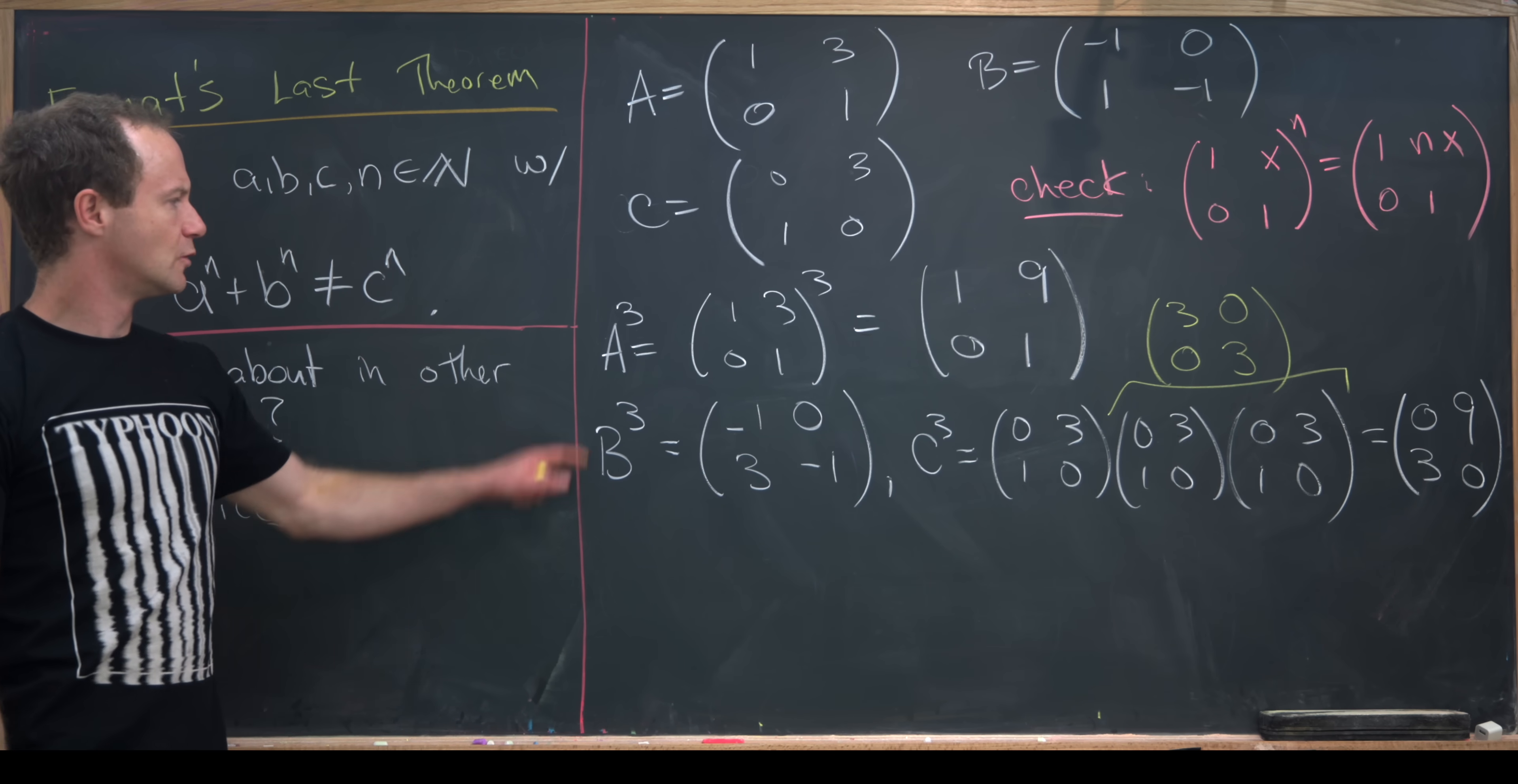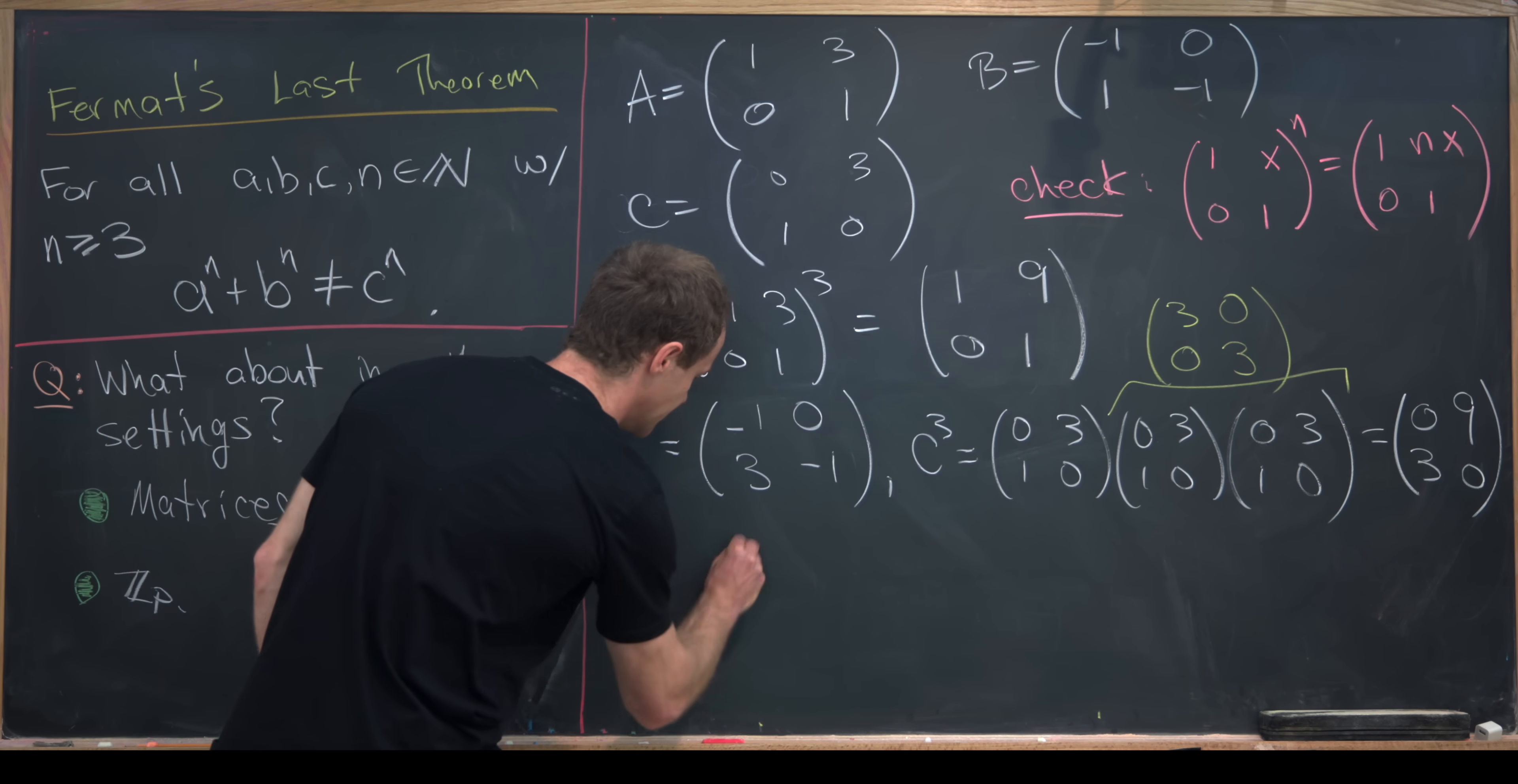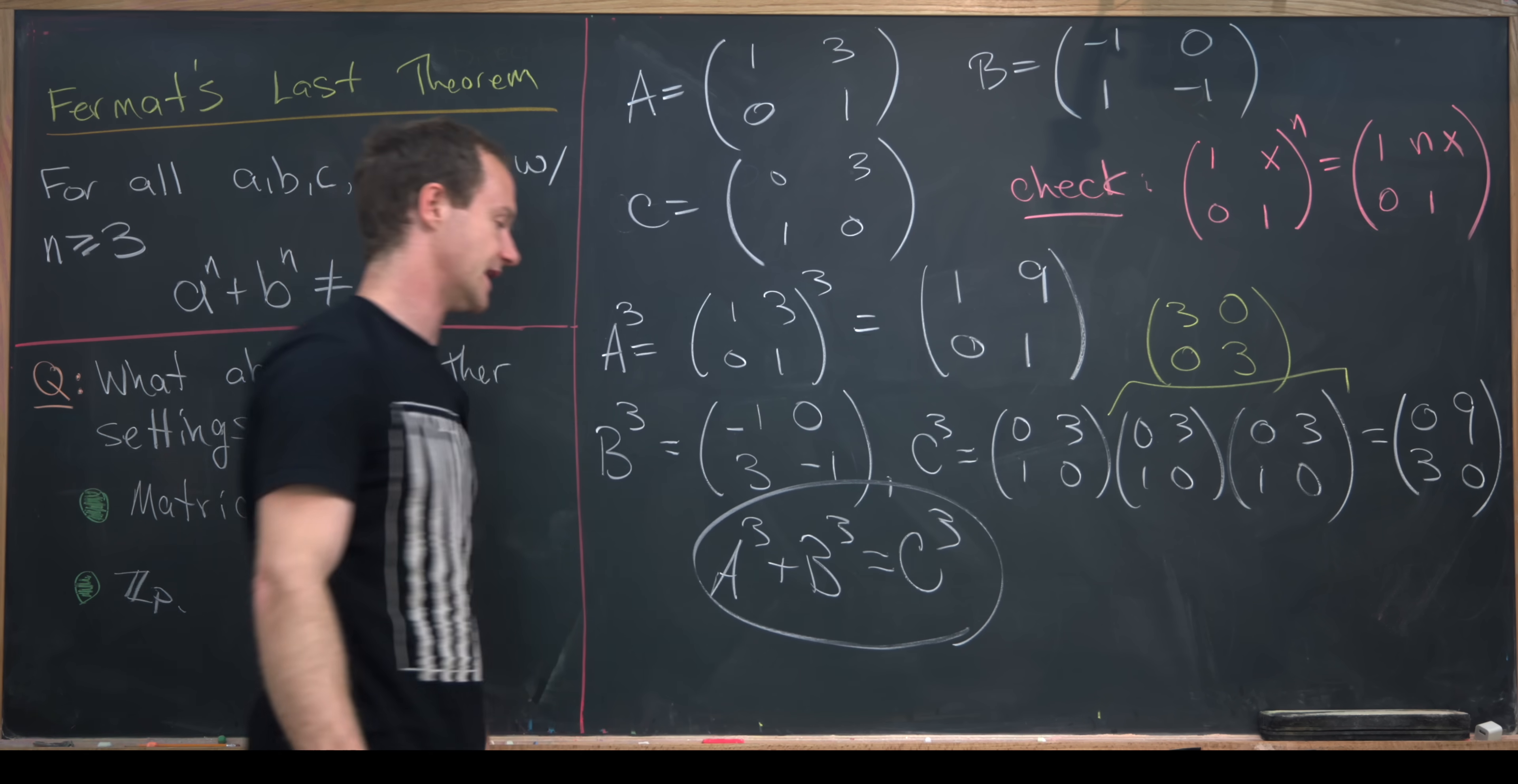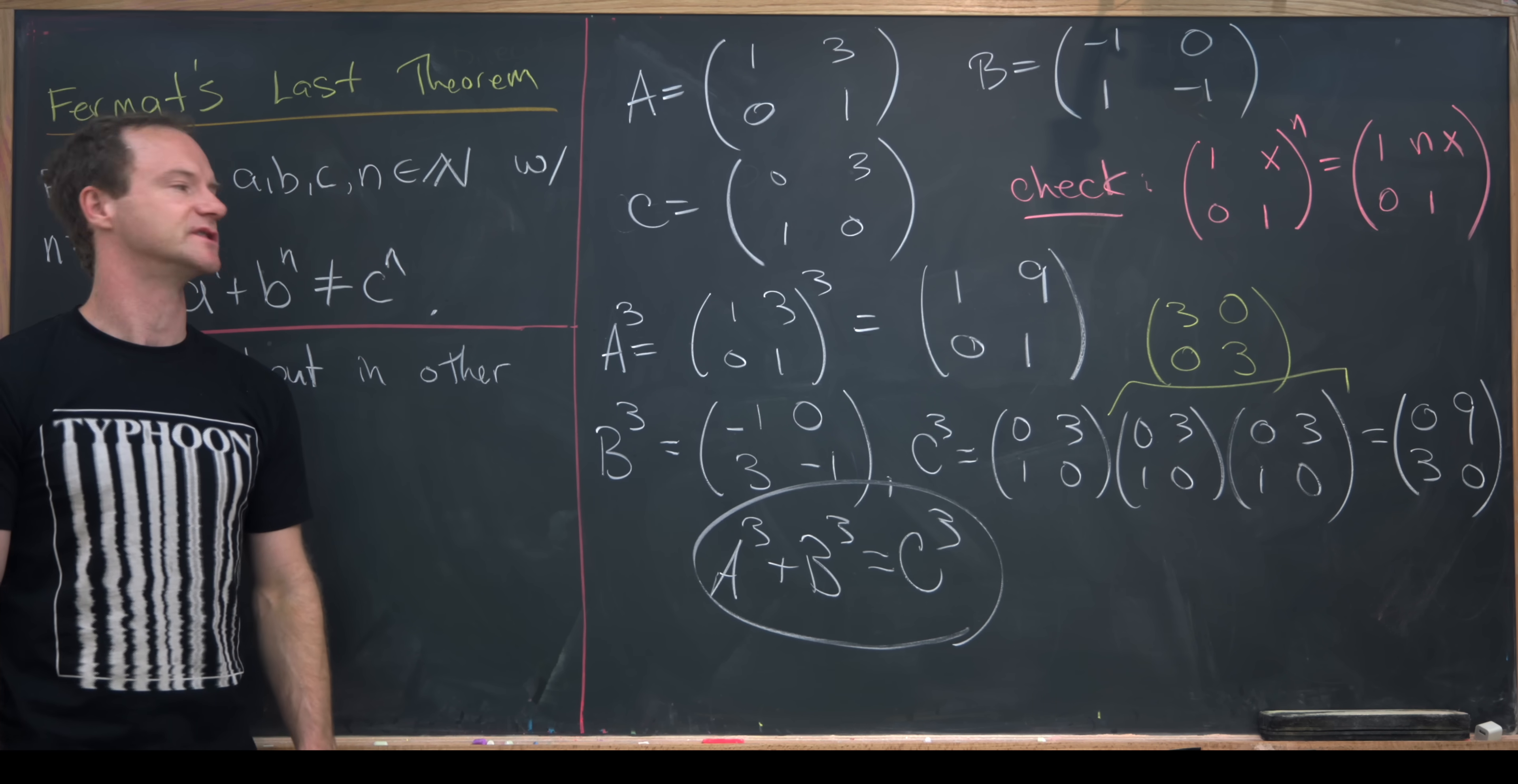But now let's see. We've got A cubed plus B cubed, and that's exactly equal to C cubed. So notice A cubed plus B cubed equals C cubed in this case, showing that something exactly like Fermat's Last Theorem does not hold in matrices with integer entries.